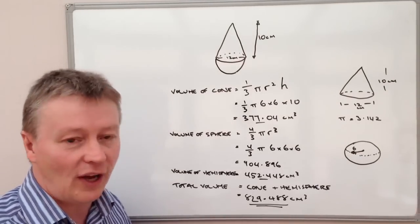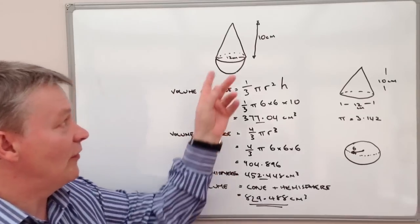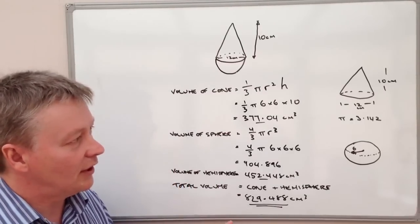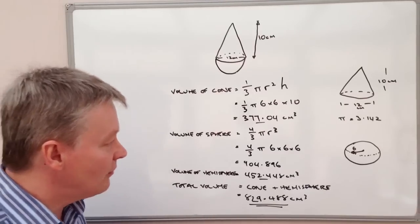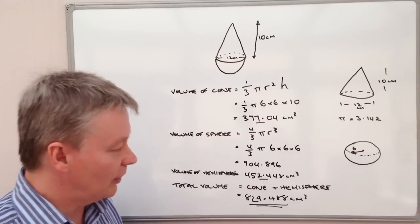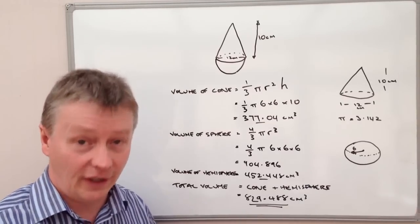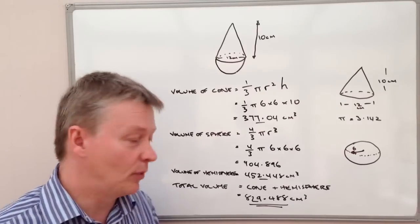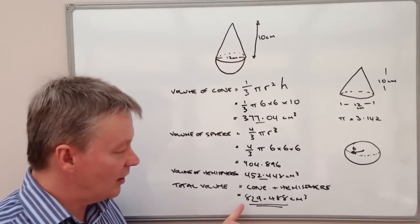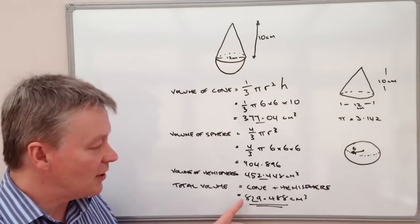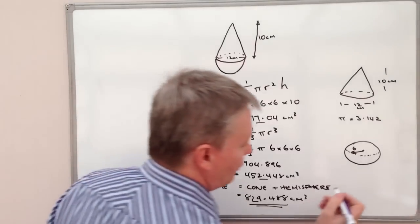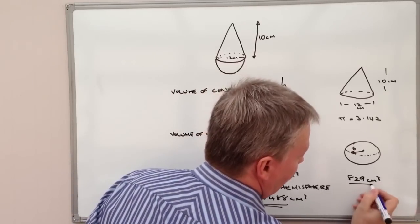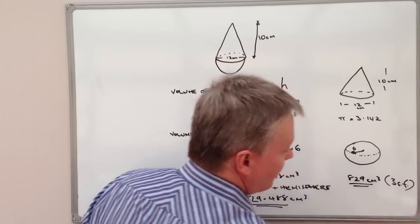The total volume is 829.488 centimeters cubed. For an exam question like this, they will usually ask you to give the total volume to a certain number of significant figures — for example, three significant figures. If you need information on significant figures and decimal places, there's a post on the MathsRap website. To three significant figures, the answer would be 829 centimeters cubed.